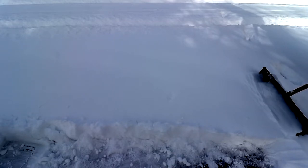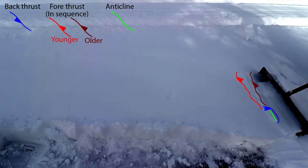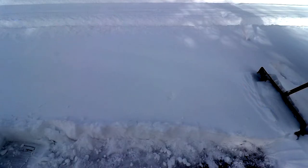Okay, let's begin. In the first section, the fold and thrust belt is just beginning to form. In the upper part of the image, there are a number of in-sequence thrusts that form. Notice here and in other segments that typically only one in-sequence thrust is active at a time. In the lower part of the image, note that a back thrust and an anticline has formed.